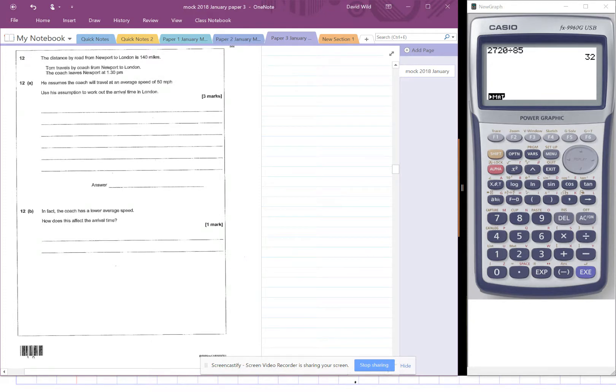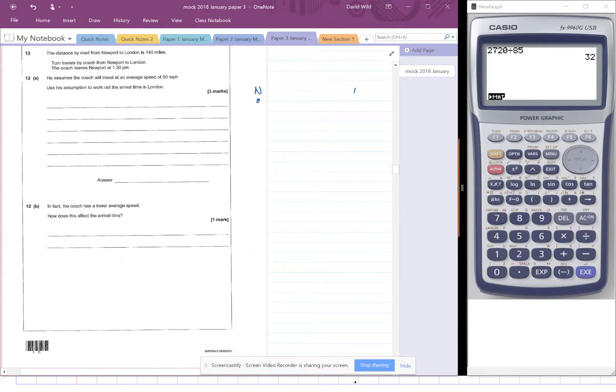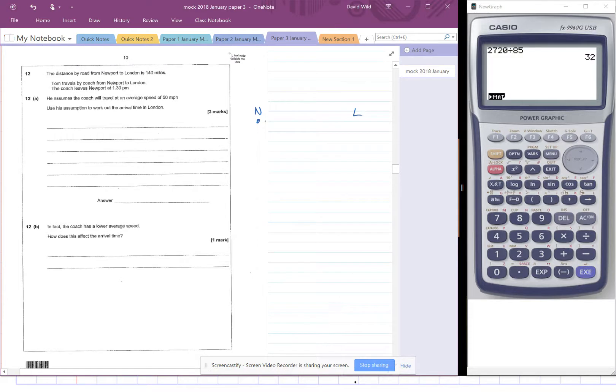Okay, Question 12. The distance by road from Newport to London is 140 miles. Tom travels by coach from Newport to London. The coach leaves Newport at 1:30 p.m. So it's going from Newport to London, and it's 140 miles. He assumes the coach will travel at an average speed of 50 miles per hour. So the speed is 50 miles per hour.